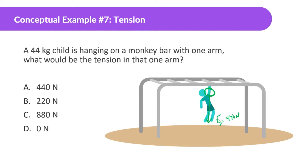The tension in this arm is going to be holding him up, making sure he doesn't fall down. That's going to be 440 newtons. This way he's not moving — he's just staying there. If he pulls himself up, this would be more, but that would be complicating it. So yes, 440 newtons.